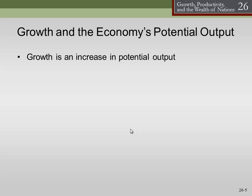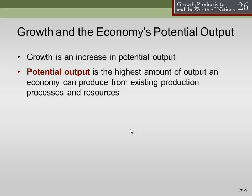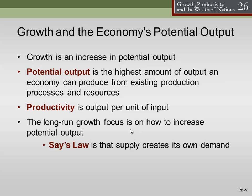That's what we're talking about when we talk about growth. Potential output is the highest amount of output an economy can produce from existing production processes and resources. So if we hold everything constant — same technology, same capital, all the resources — how much could we produce long-run? Productivity is output per unit of input. A productivity rise is where we can actually do more with the same amount of inputs. A productivity fall is where we can do less with the same amount of inputs. The long-run growth focus is on how to increase potential output.